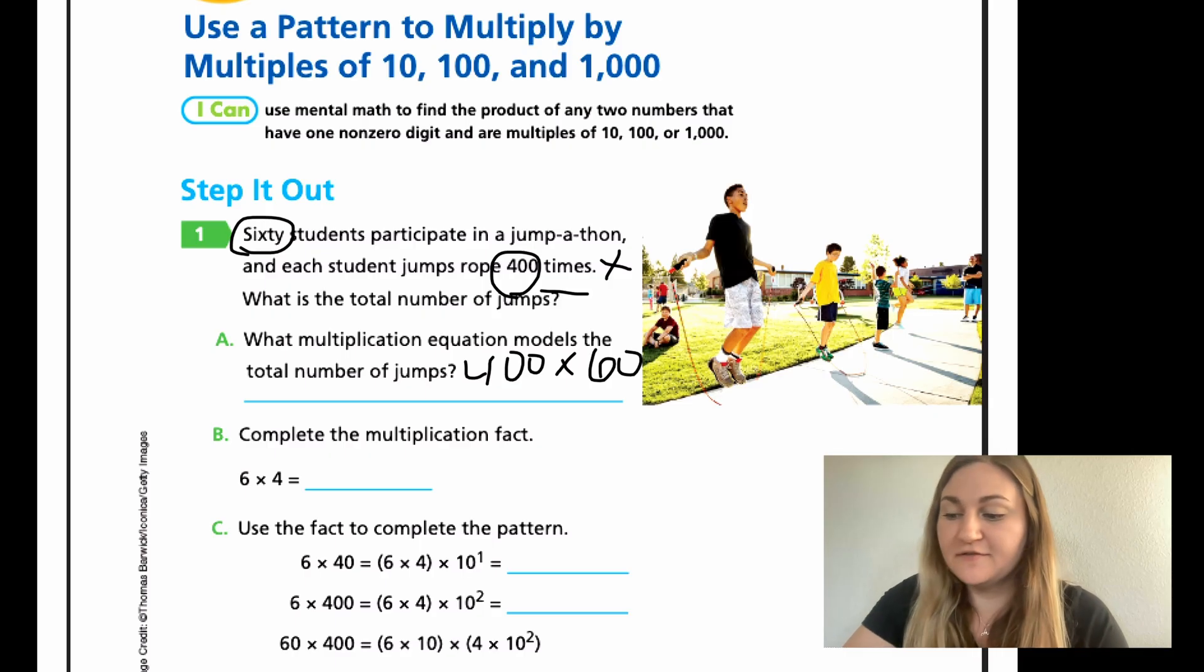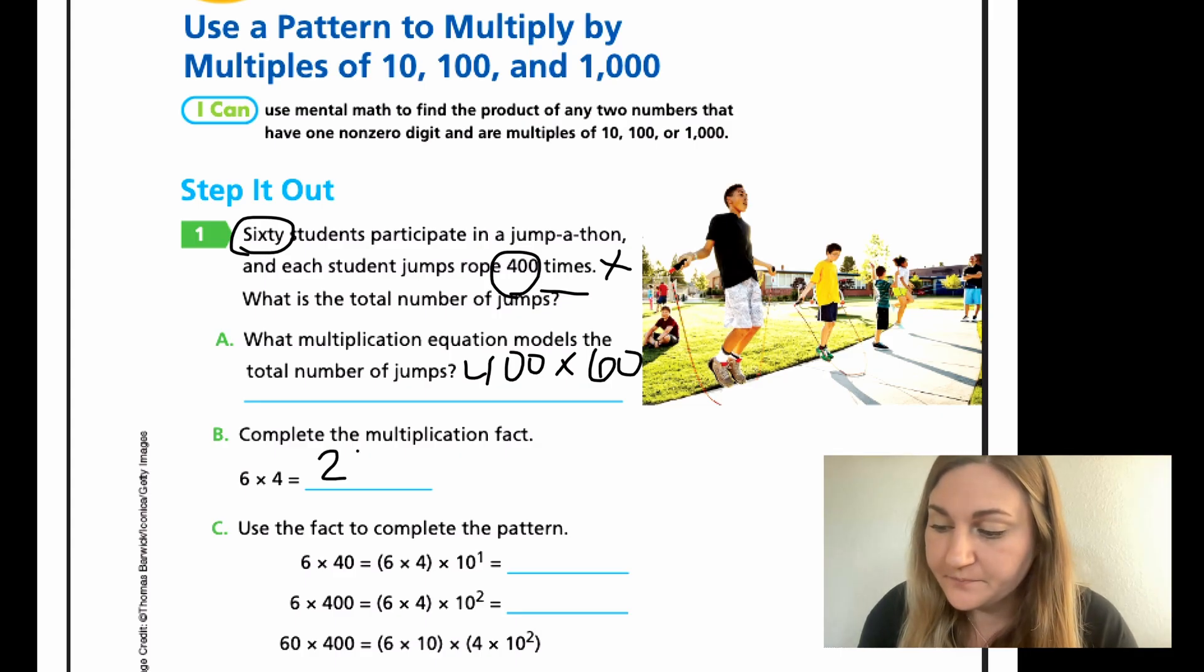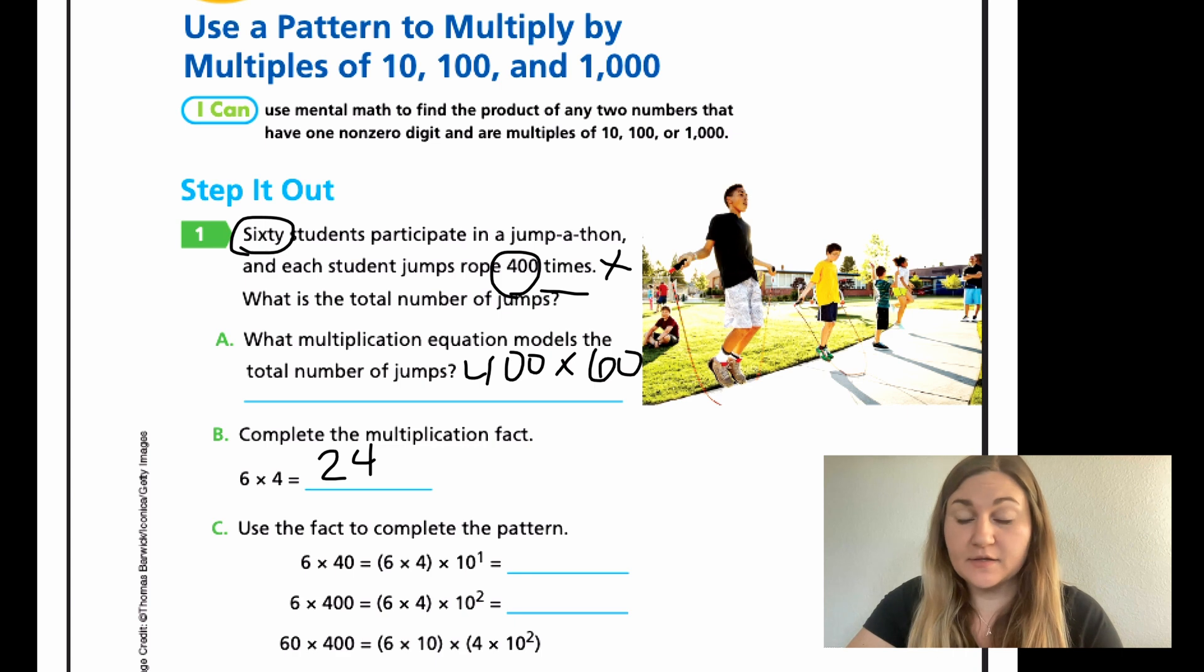Part B, complete the multiplication fact. 6 times 4. You should know your quick facts. 6 times 4 is 24, and that is going to be needed for the rest of the problem.